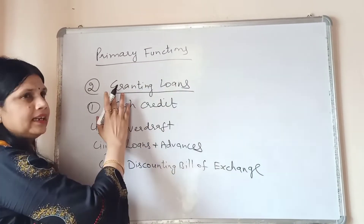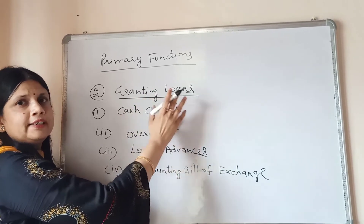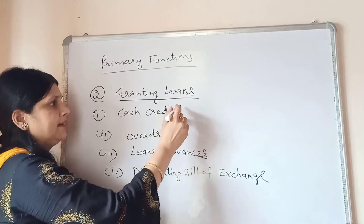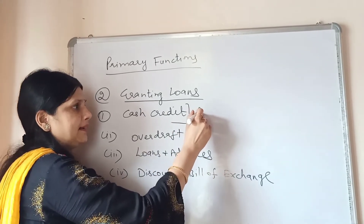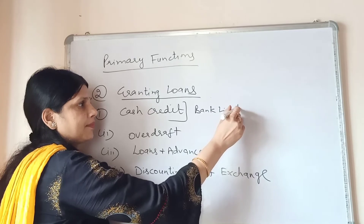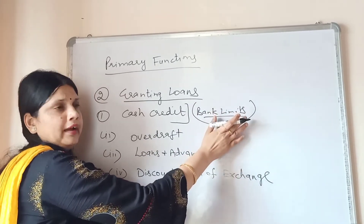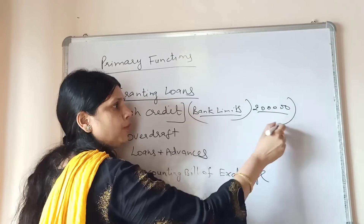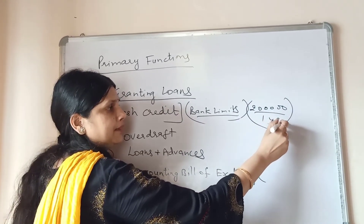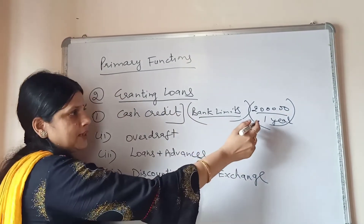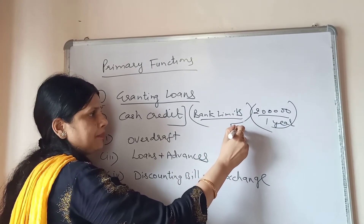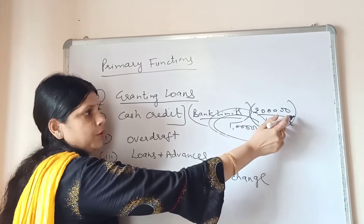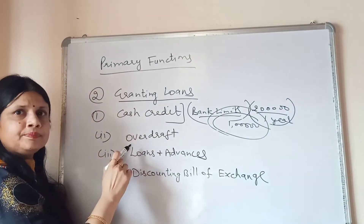The second primary function is granting loans. The bank provides loans to its clients in various forms. The first form is cash credit — the bank sets a credit limit and you can withdraw under that limit. For example, if the bank sets a limit of 2 lakh rupees, you can withdraw up to 2 lakh in one year. However, interest is charged only on the amount you actually withdraw, not on the full limit.